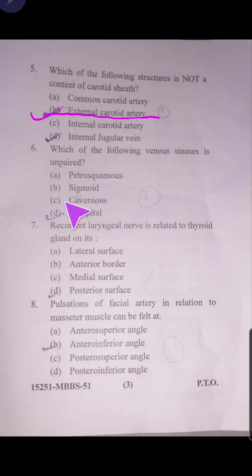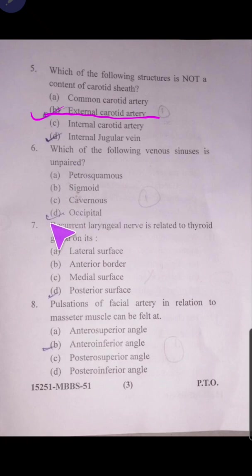Question number six: which of the following venous sinuses is unpaired — petrosquamous, sigmoid, cavernous, or occipital? All of them are paired except the occipital sinus. The occipital sinus is found within the falx cerebelli.